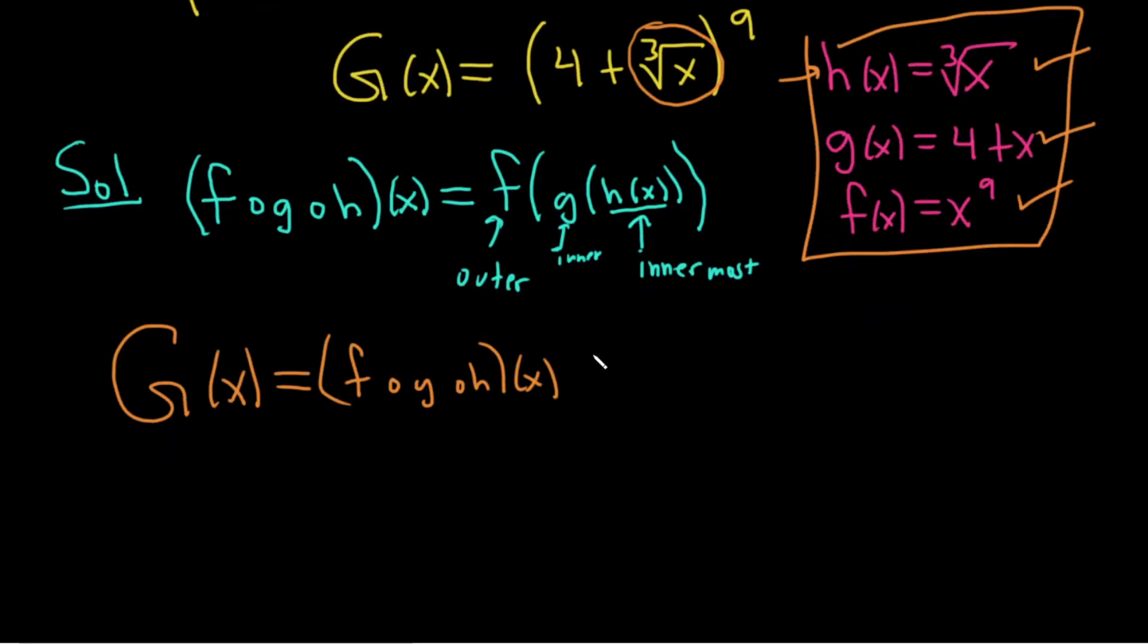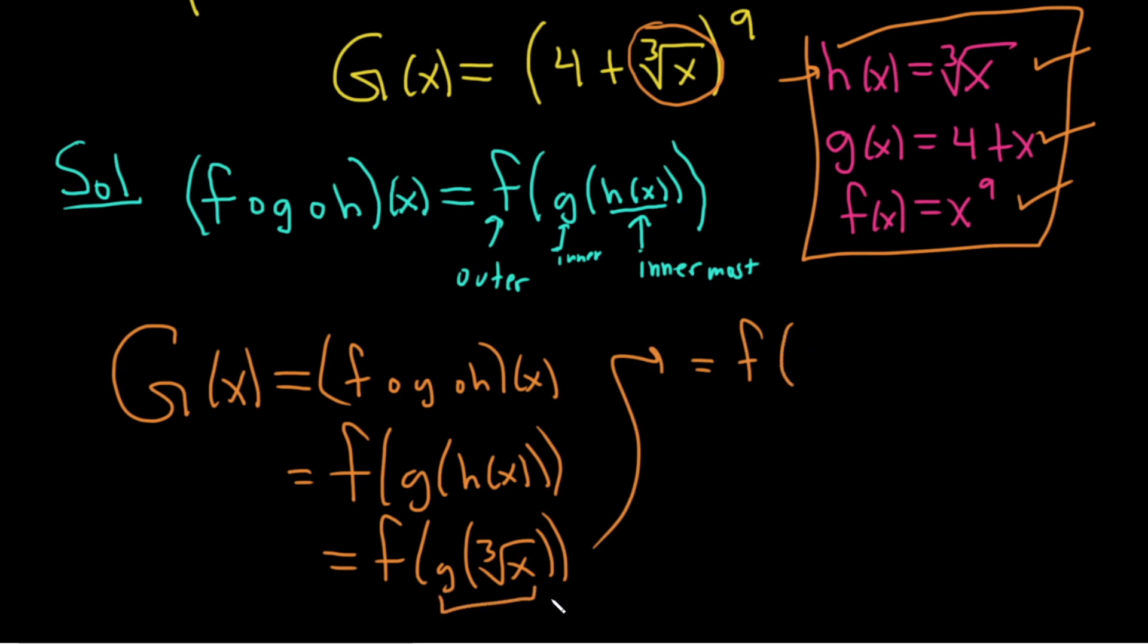And we can go ahead and check. Let's just make sure it works. So this is f of g of h. So h is the innermost function, so it'll be the cube root of x. So this is g of the cube root of x. So you go to g and you just replace the x with the cube root of x. So it's four plus cube root x. You're just replacing the x with the cube root of x. Now we look at f. f is x to the ninth. So it's just this whole piece here, this is our x, this giant piece here, and it's to the ninth. And that's exactly what big G is. So everything looks okay.